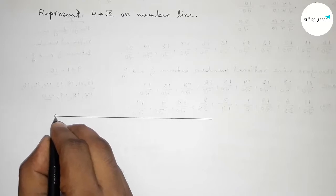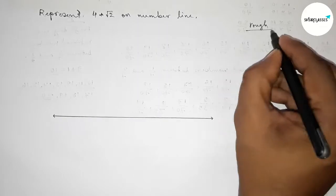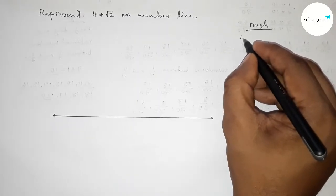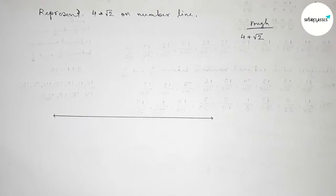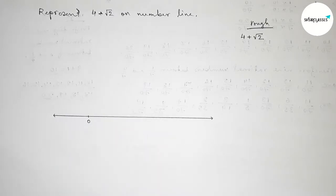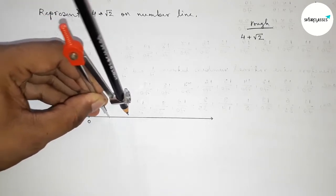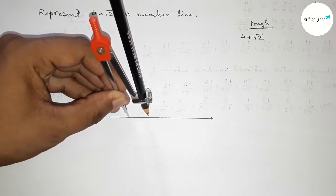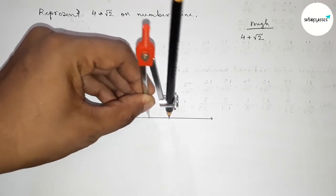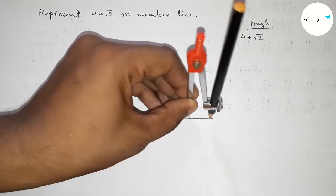Now roughly discussing some important calculations. We have to represent 4 plus root 2. Before discussing this, first taking here number 0. Now by using a compass and the length of the compass is one unit length, now marking the numbers on the line by this way.